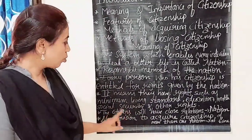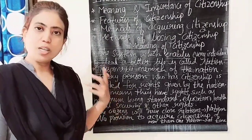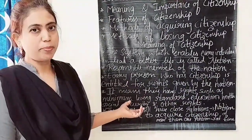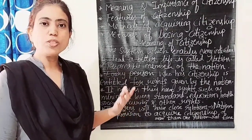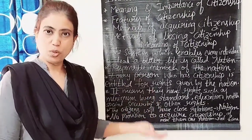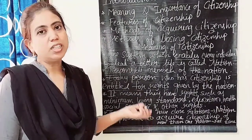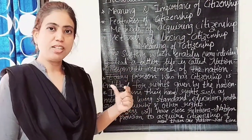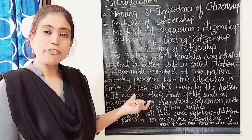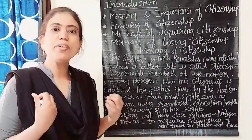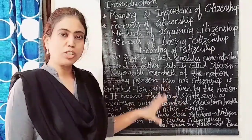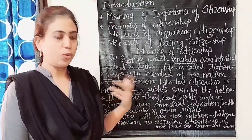Social security means after retirement or for old age, the government provides social security to the people. As citizens, old age people and retired people who have worked throughout their years will get money as a pension or through various government schemes provided as social security.